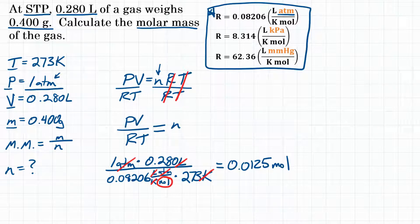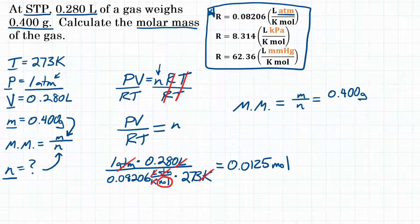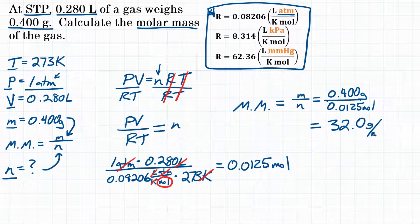We have our n value now. We have moles. So we can plug that into our molar mass equation along with our mass. Molar mass equals mass over moles. For mass, the problem gave us 0.400 grams. For moles, we solved for 0.0125 moles. Punch that in your calculator. You should get right around 32.0, with units of grams per mole.